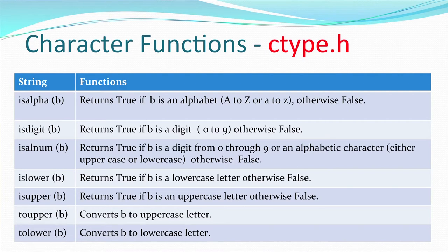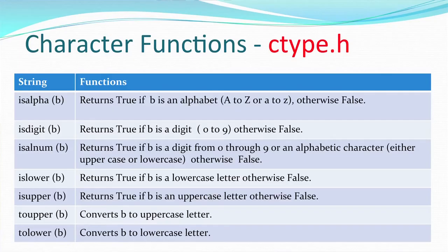Character functions are defined in ctype.h. A character is any key you press on the keyboard — a number, an uppercase or lowercase alphabet, symbols, or whitespace keys like space bar and enter. The functions include: isalpha() — returns true if the character is an alphabet; isdigit() — checks if the character is between 0 and 9.